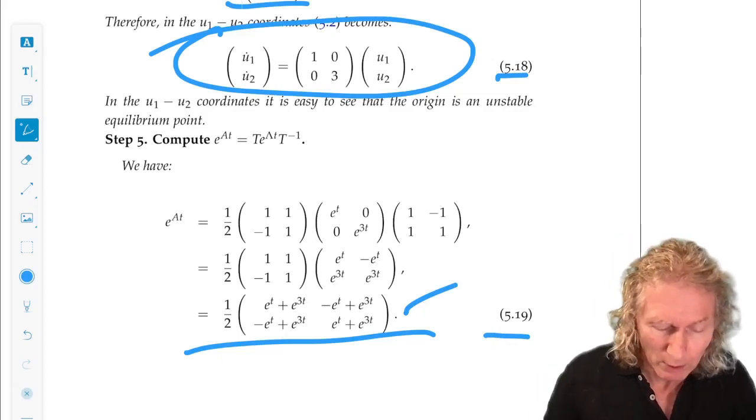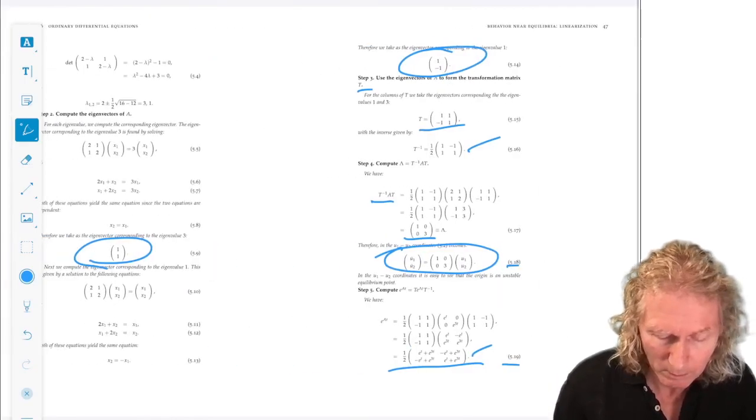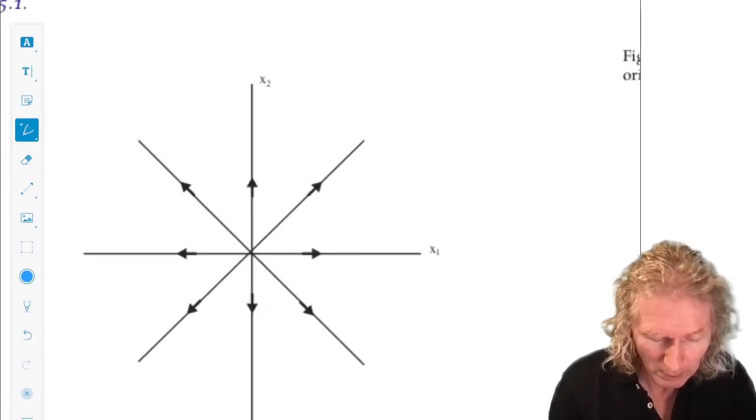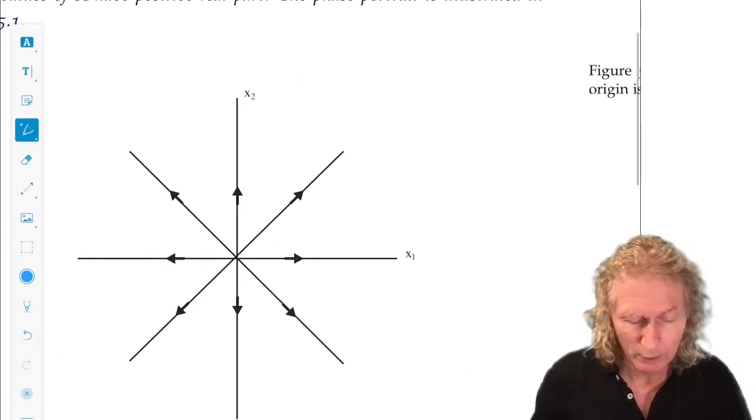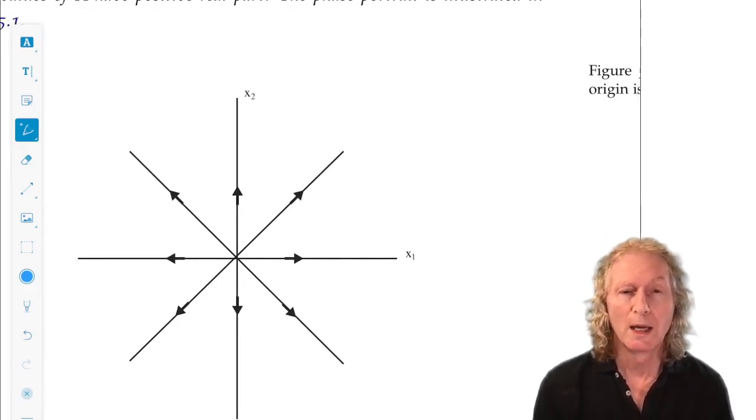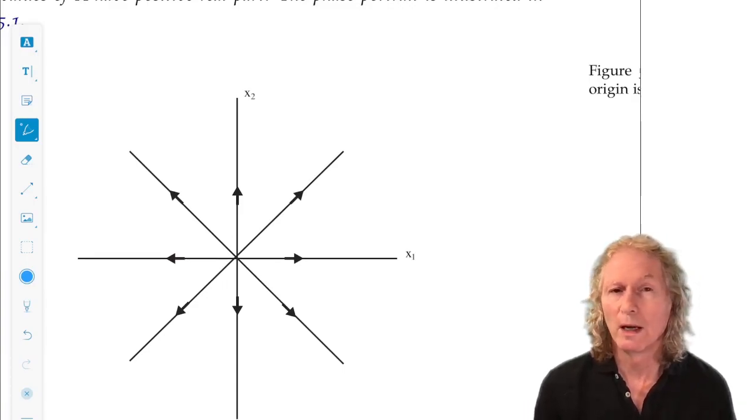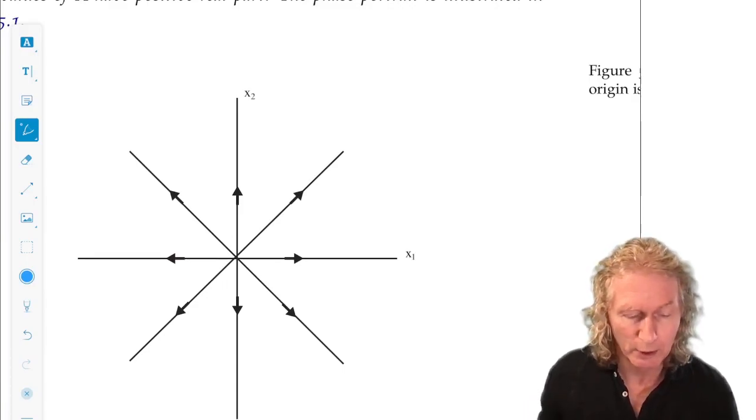So, if we want to draw the phase portrait for this system, it looks something like this. The origin is the only equilibrium point or fixed point, and trajectories are just lines that move away from the origin at an exponential rate.